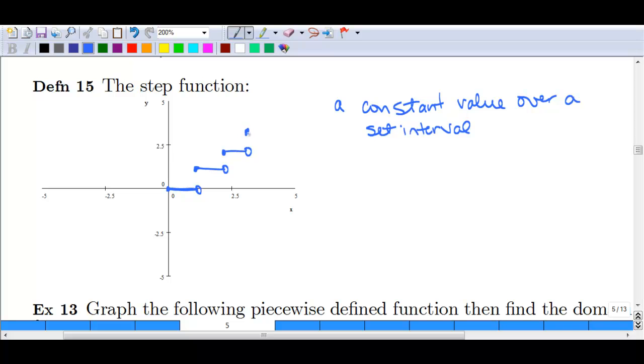And so forth and so on. So, at 3, it would jump up to 3. And it would just keep doing that. That is an example of one such step function.